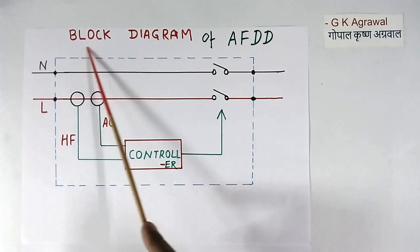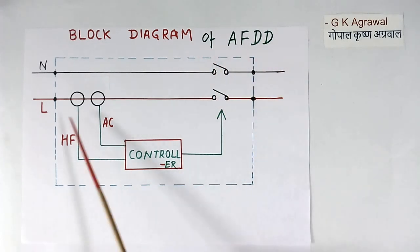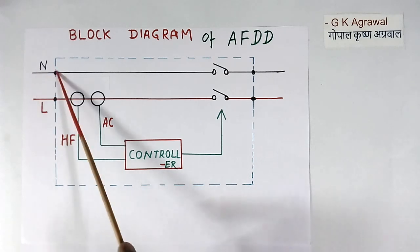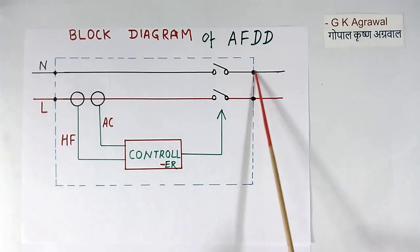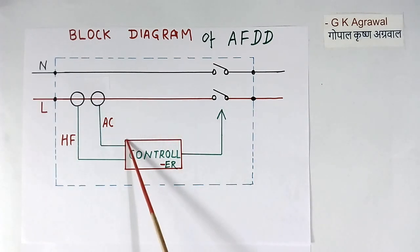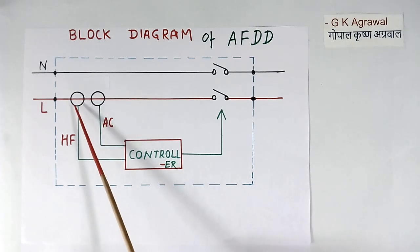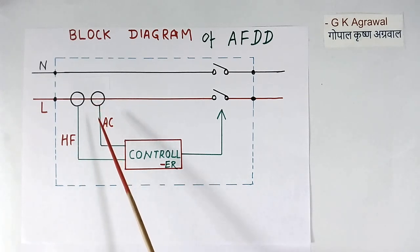This is block diagram of AFDD breaker. See here two wires are coming, line and neutral, and two wires are going out. And current is flowing in this wire. This is controller. This is electronic controller. It has two sensors. One sensor senses the high frequency current. Other sensor senses the low frequency AC current.